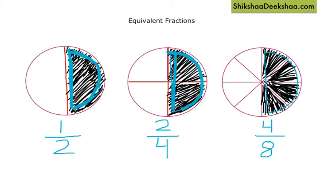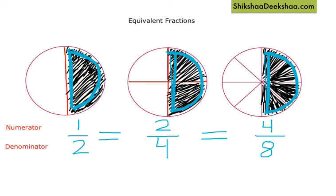These two parts make half, and these four parts together also make a half. So fractions which have equal value are called equivalent fractions. In a fraction, the number at the top is called the numerator and the number at the bottom is called the denominator. We can obtain equivalent fractions by multiplying or dividing the numerator and denominator by the same number.